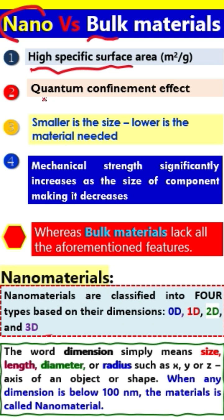The second important characteristic is the quantum confinement effect. Quantum confinement effect means that when we decrease the size, the optoelectronic properties of the material change drastically.